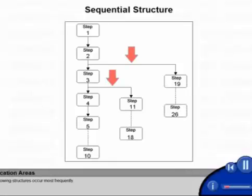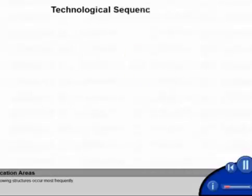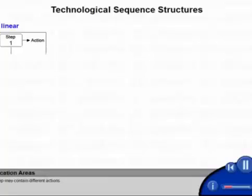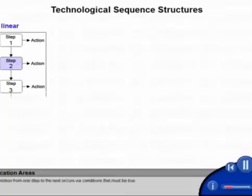The following structures occur most frequently. During the linear sequence, the individual steps are processed successively. One step may contain different actions. The transition from one step to the next occurs via conditions that must be true.